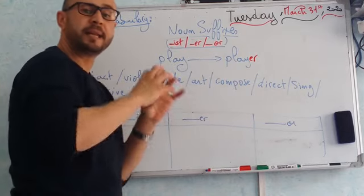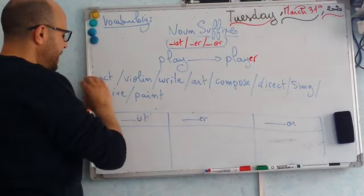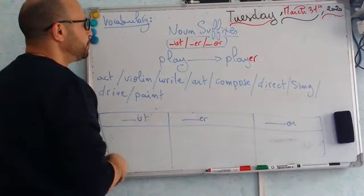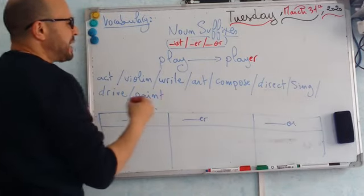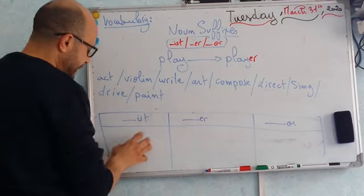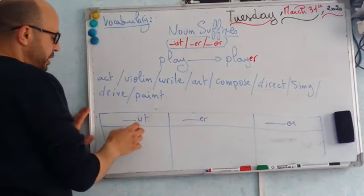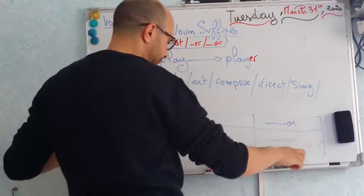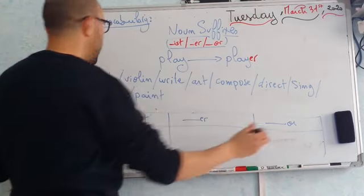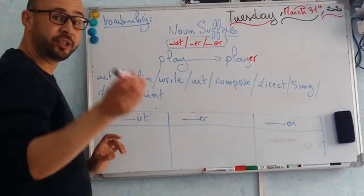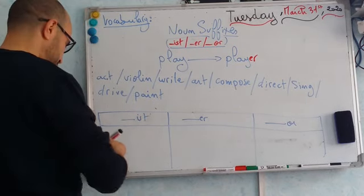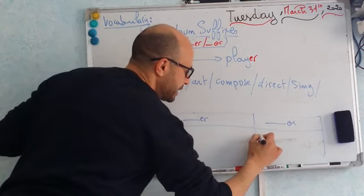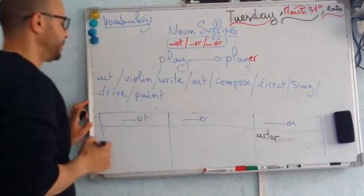It means it is used to form nouns. I give you here a list of words, and I need you to transform them by adding suffixes at the end of them. And let's put them in the right column, whether it is going to be used with I-S-T, or E-R, or O-R. Let's take the first example. Act. Good. An actor. Good. Here or here? Good. It's here. Actor. Very good.